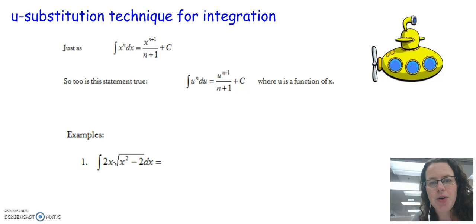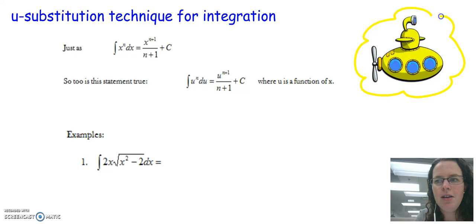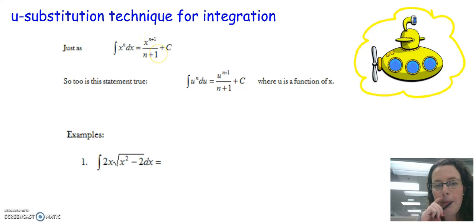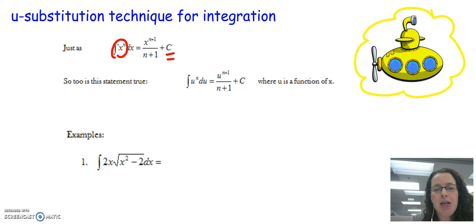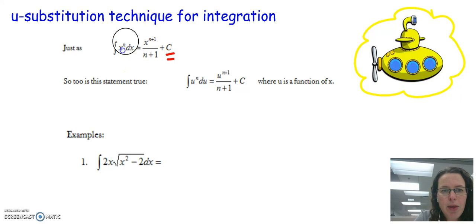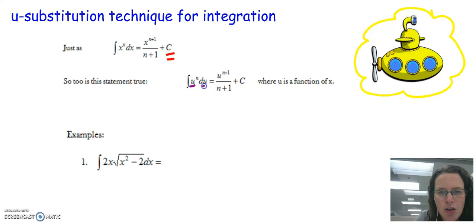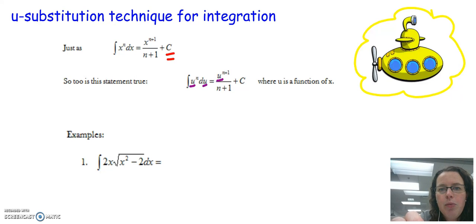Welcome to this video on a new technique for integration called u-substitution. Recall the power rule for integration: taking the antiderivative of x^n, we increase that power by one and divide by the new power, then add the constant of integration plus C. This constant exists because when we take the derivative, the constant disappears and we return to x^n.